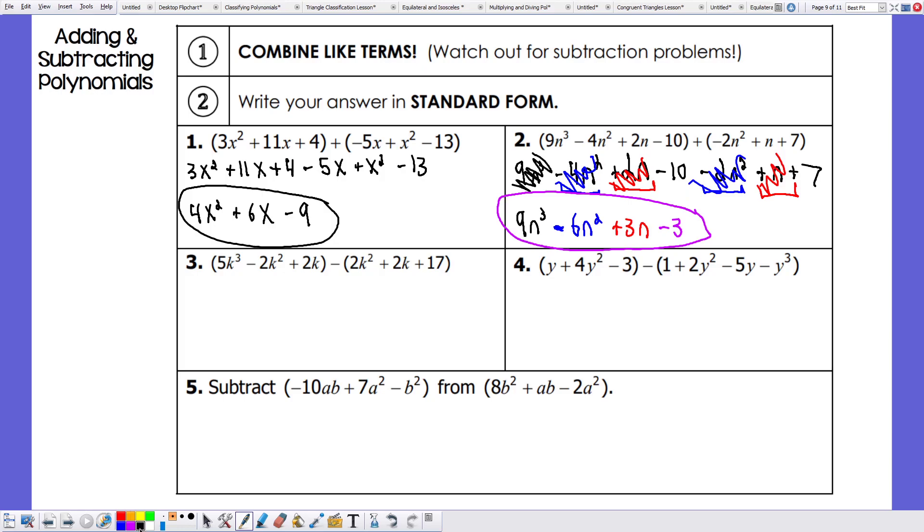Now let's work on some subtraction problems. These aren't quite as bad. I mean, they're a little bit different, but just in one way. And that we have to distribute the negative sign to that second pair of parentheses. Leave the first one the same. So I'm going to keep the first set of parentheses exactly as it is, plus 2k. Now, distributing the negative, we have a minus 2k squared, minus 2k, minus 17.